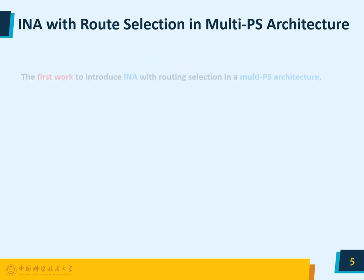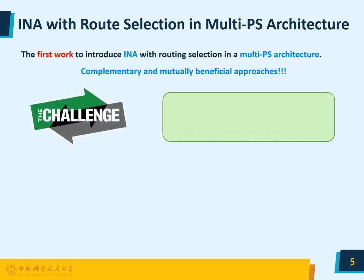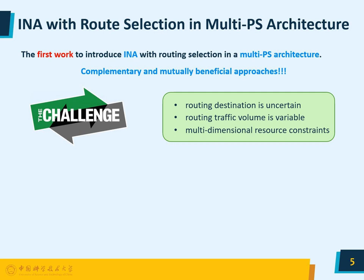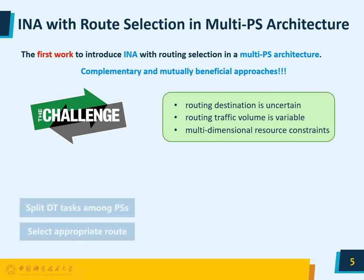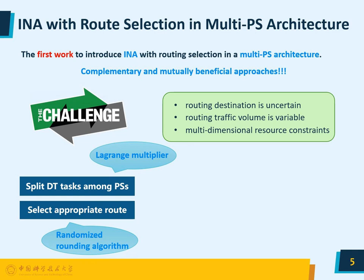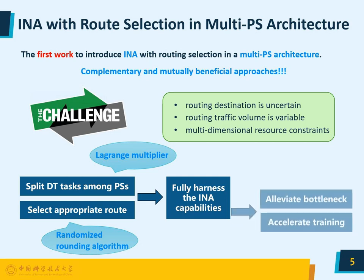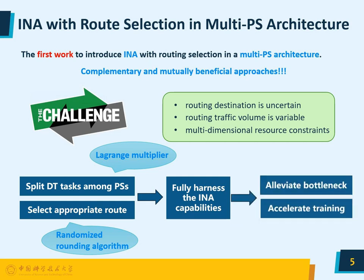To bridge this gap, we propose inART, the first work to introduce INA with routing selection in a multi-PS architecture. However, it is a non-trivial mission to achieve this goal. Firstly, determining the destination PS for each gradient is uncertain. Secondly, gradient aggregation on programmable switches can lead to varying traffic sizes and forwarding. Thirdly, conducting distributed training encounters multidimensional resource constraints. Therefore, inART adopts a two-phase approach, splitting the training tasks among multiple PSs and selecting routing paths for INA. We propose Lagrange multiplier and randomized rounding algorithms for these phases respectively, to effectively alleviate communication bottlenecks and enhance the efficiency of distributed training.